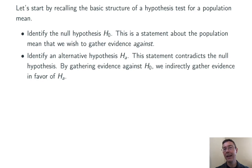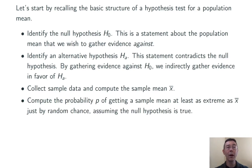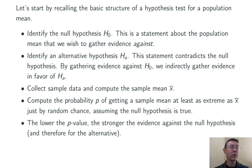The idea is that by gathering evidence against the null hypothesis, we're indirectly gathering evidence in favor of the alternative hypothesis. Then we go out and collect some data and compute a sample mean, X bar. Then we compute the probability P of randomly getting a sample mean at least as extreme as the one we actually got just by random chance, assuming the null hypothesis is true. That value P is called the p-value of the test, and lower values indicate stronger evidence against the null hypothesis, and therefore in favor of the alternative.